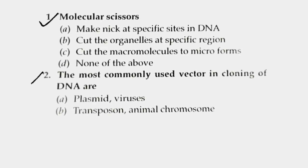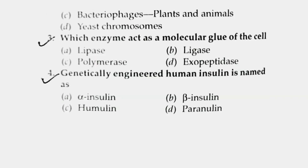Next question: What is a molecular scissor? Molecular scissor refers to restriction endonuclease enzyme. Exonuclease cuts from either the 3-end or 5-end, but endonuclease makes a nick at a specific site in DNA — at a particular sequence. Restriction endonuclease is called the molecular scissor.